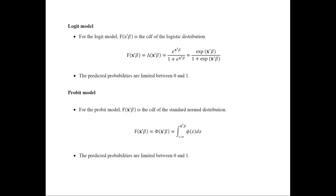One of the advantages of the logit model is that predicted probabilities are limited between 0 and 1 — it cannot be less than 0 because it's an exponential function, and it cannot be greater than 1. For the probit model, f of x prime beta is the CDF of the standard normal distribution. Again, the predicted probabilities are limited between 0 and 1. Although these two models have very different functional forms, if you use one or the other, you will get very similar results.